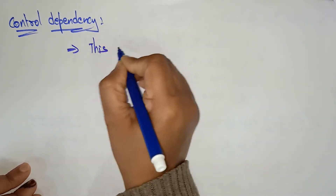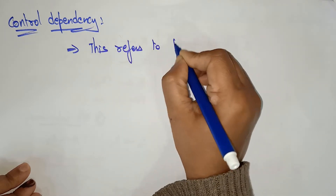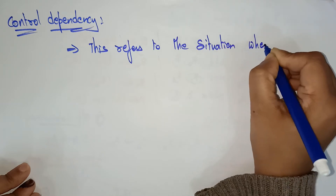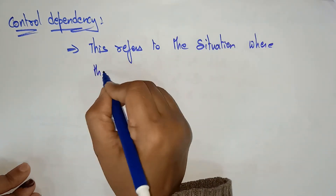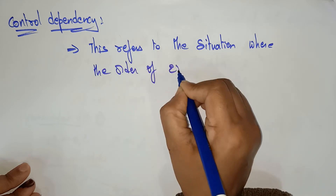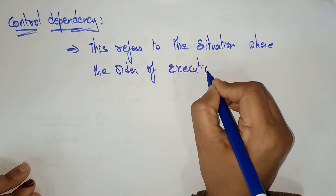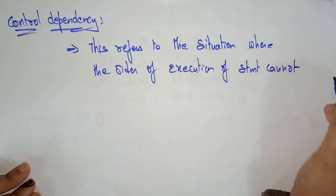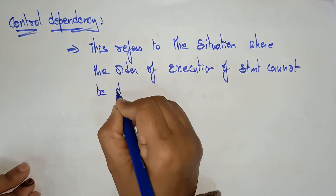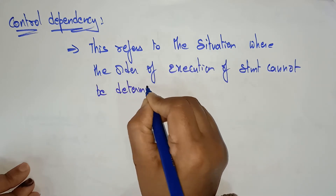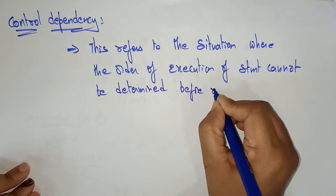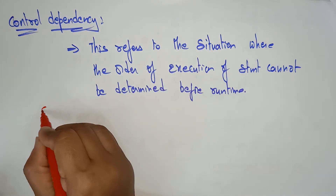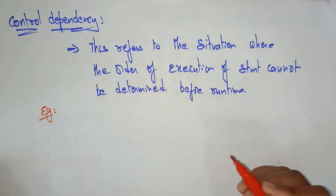This control dependency refers to the situation where the order of execution of statements — that is, what statement has to be executed next — cannot be determined before run time. You cannot determine it before run time. Let me explain with an example of how this control dependency works.